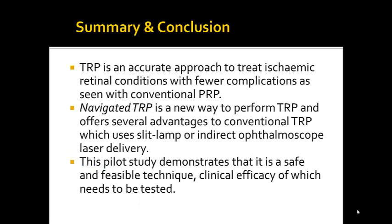Summary and conclusion: TRP is an accurate approach to treat ischemic retinal conditions with fewer complications as seen with conventional PRP. Navigated TRP is a new way to perform TRP and offers several advantages over conventional TRP using slit lamp or indirect ophthalmoscope laser delivery. This pilot study demonstrates that it is a safe and feasible technique, the clinical efficacy of which needs to be tested.